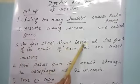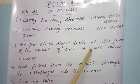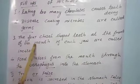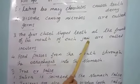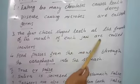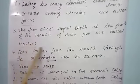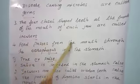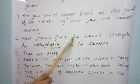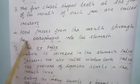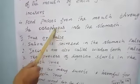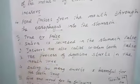The four chisel-shaped teeth at the front of the mouth of each jaw are called incisors — I-N-C-I-S-O-R-S, incisors. Food passes from the mouth through the esophagus — E-S-O-P-H-A-G-U-S — into the stomach.